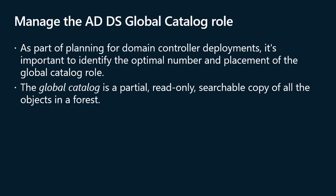As part of planning for domain controller deployments, it's important to identify the optimal number and placement of the global catalog role. The global catalog is a partial, read-only, searchable copy of all the objects in a forest. It can help speed up searches for objects stored on domain controllers in a different domain in the forest. Within a single domain, each domain controller contains all information about every object in that domain, but only a subset replicates to global catalog servers in other domains. For a query to include results from other forest domains, you must query a domain controller that is also a global catalog server.